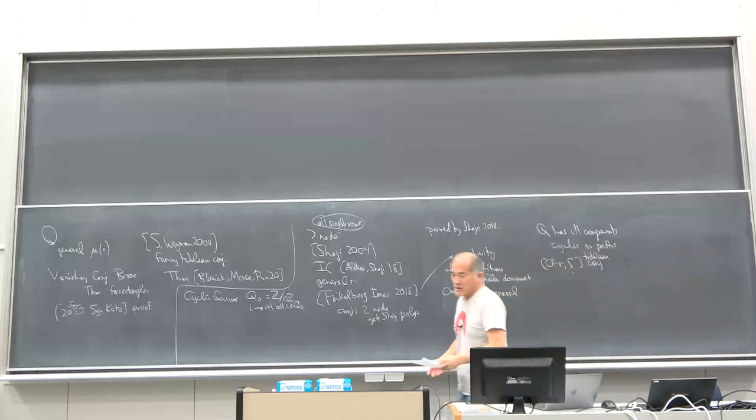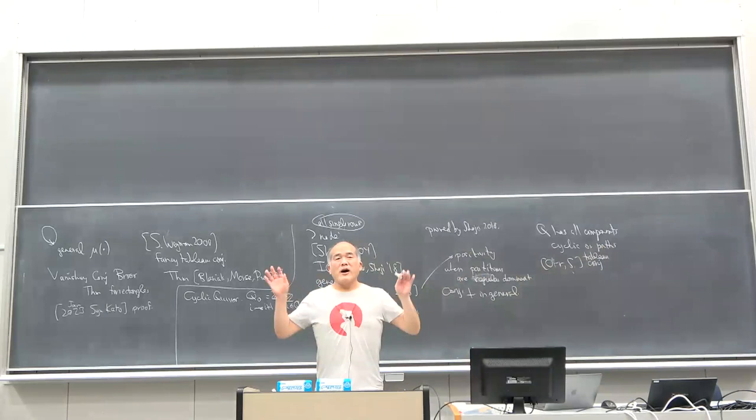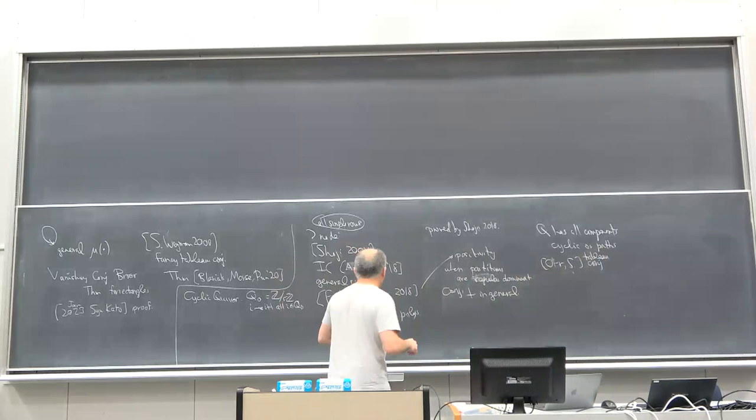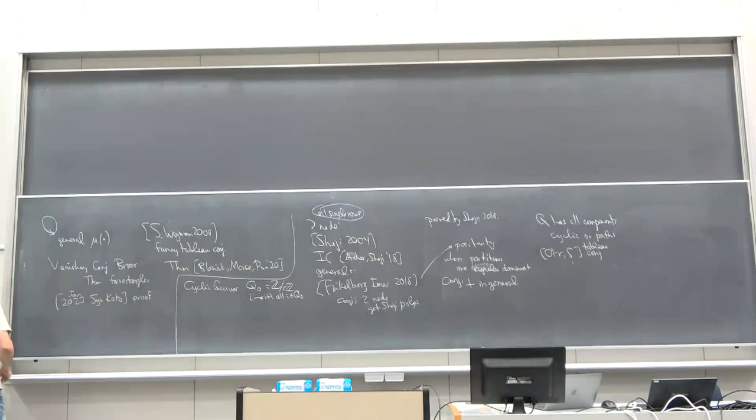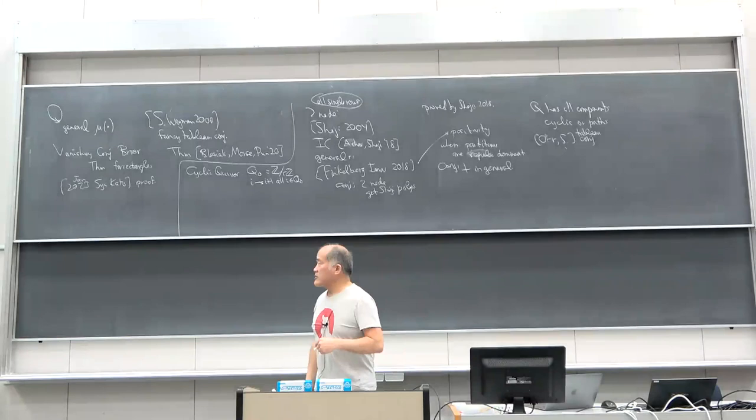I think I've gotten that out of my system. There are also connections with wreath Macdonald polynomials but I won't get into that. Now we stop and reset — this is the real lecture two. Part one was about these symmetric series that go on forever with finitely many X variables. Now we're going to do symmetric functions.